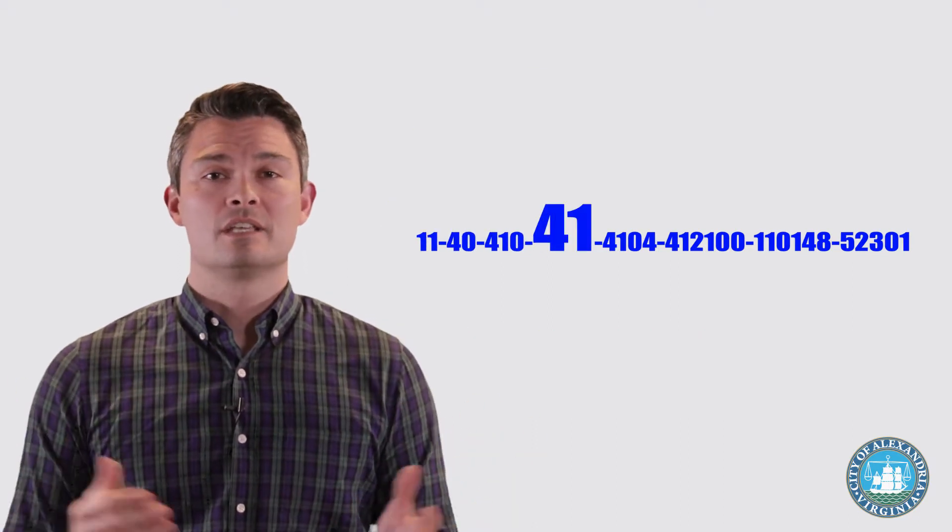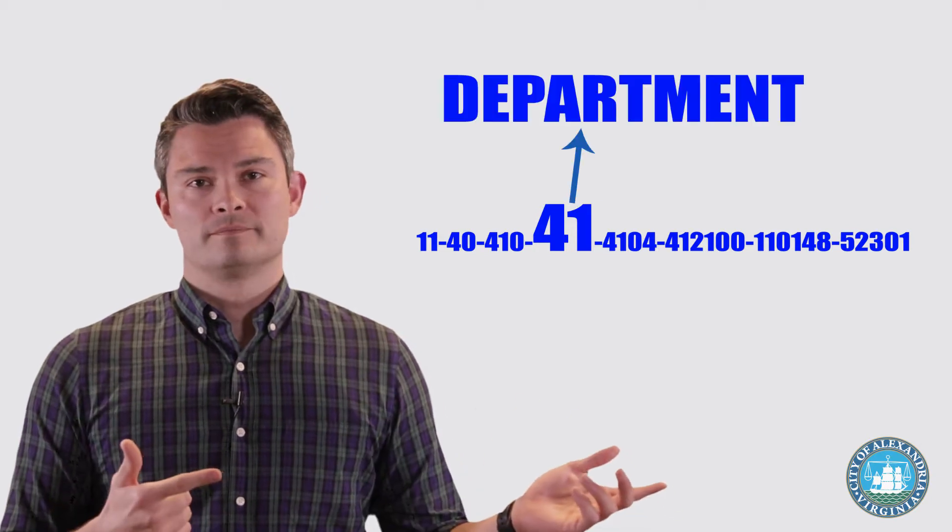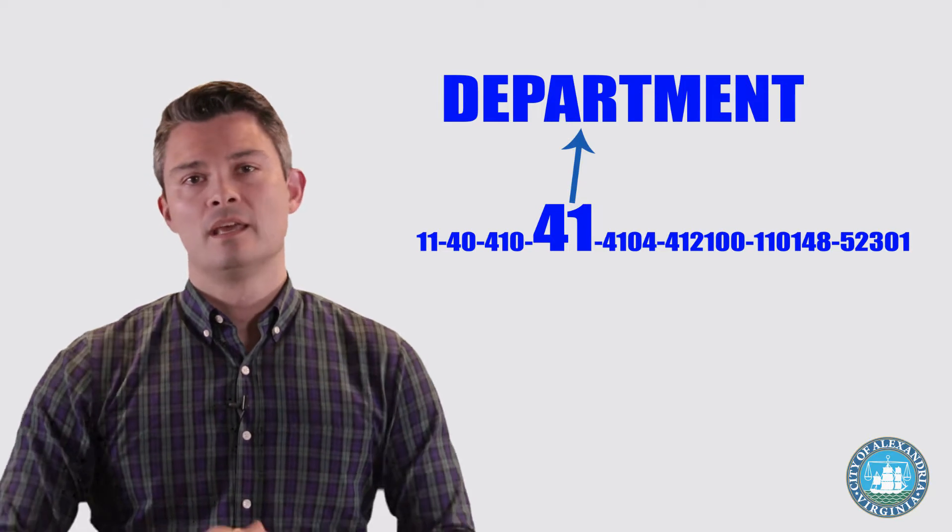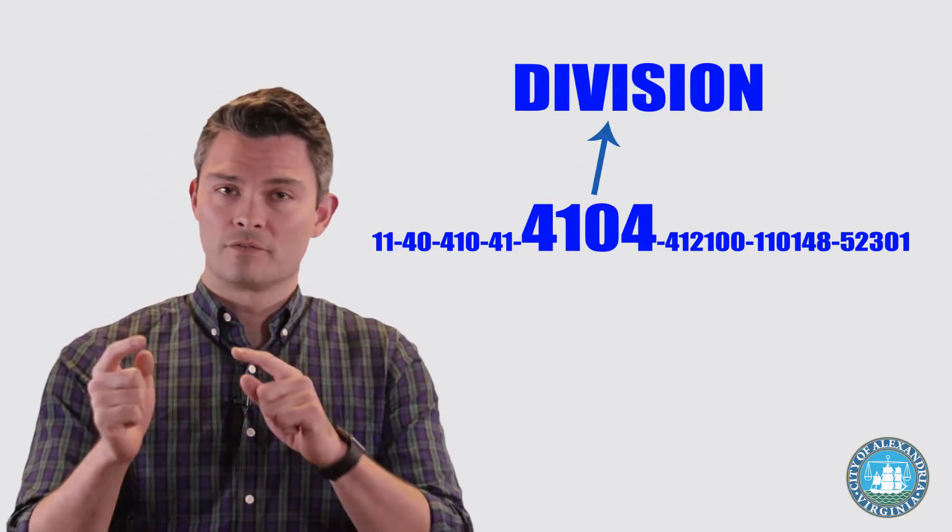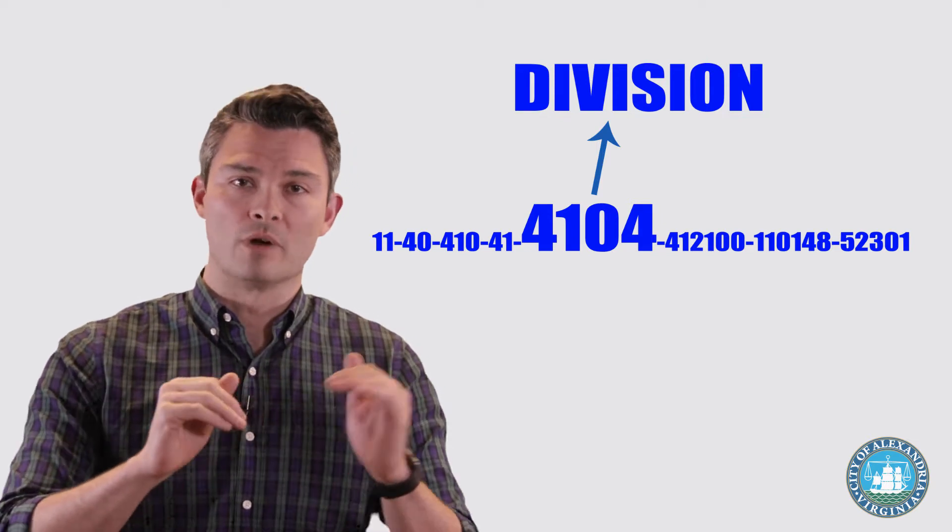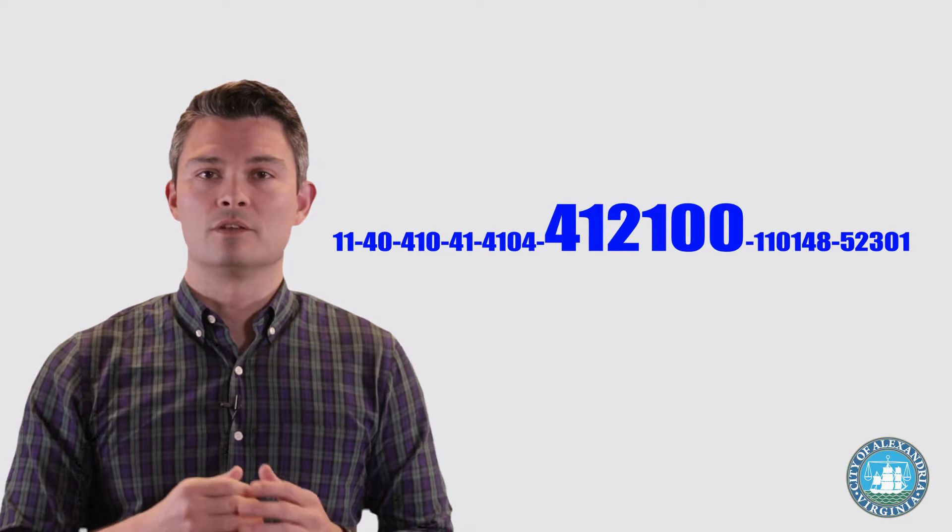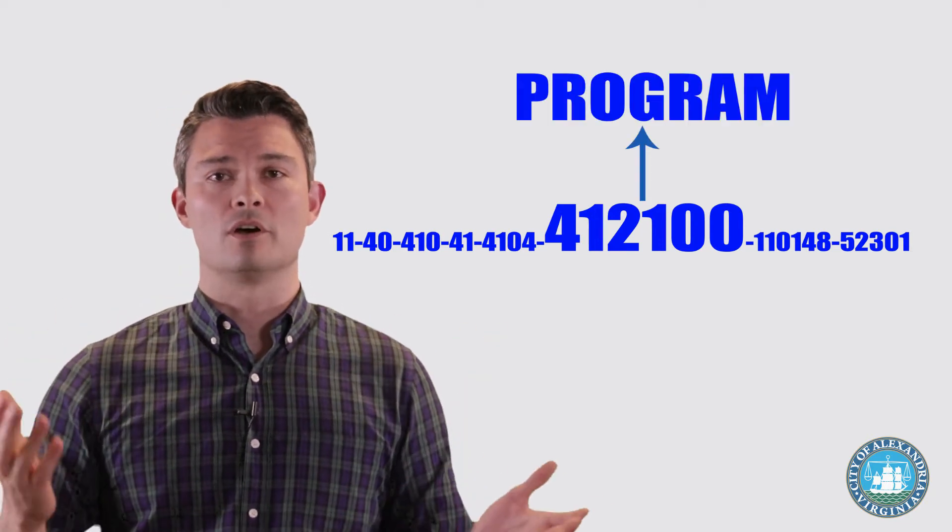Next is a two-digit segment that should also look familiar. Look back at the street maintenance org. Yep, it's the department, which in this case, 41, which is TESS. Next is a four-digit segment, which is division. That's department in the first two digits, followed by a running count. And after division is a six-digit segment that you should recognize. Yep, it's the program. The program lives in the long string.